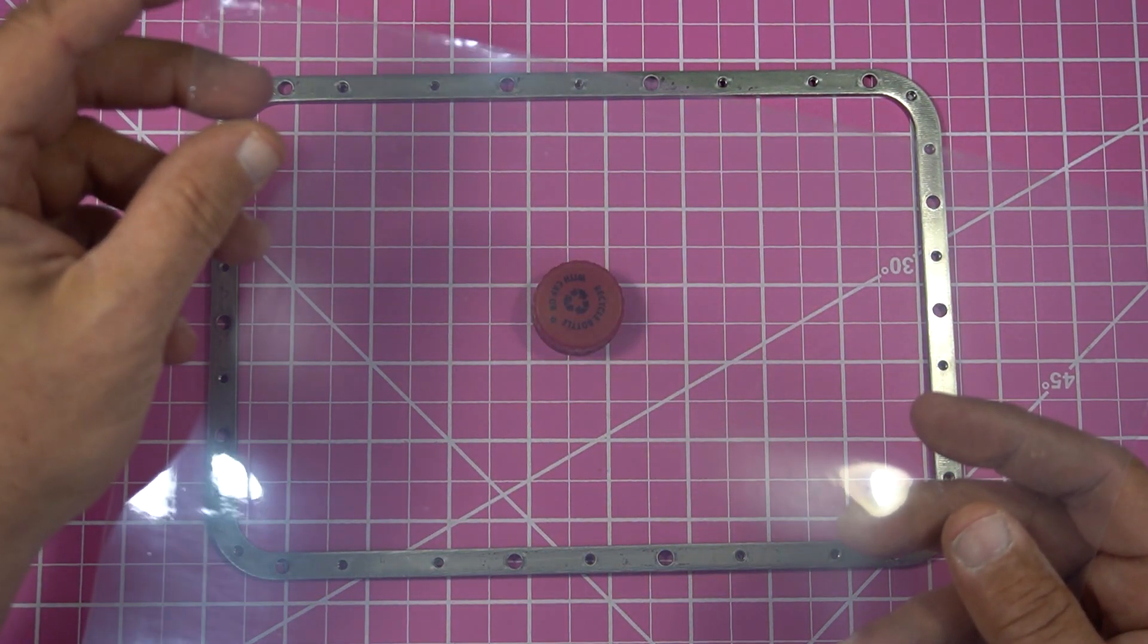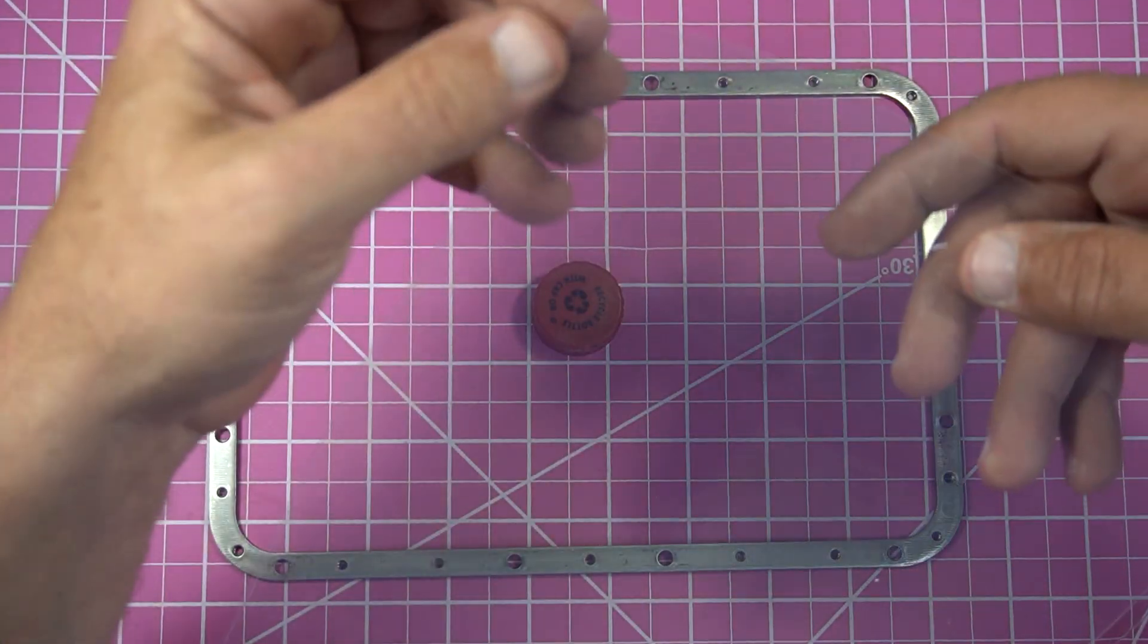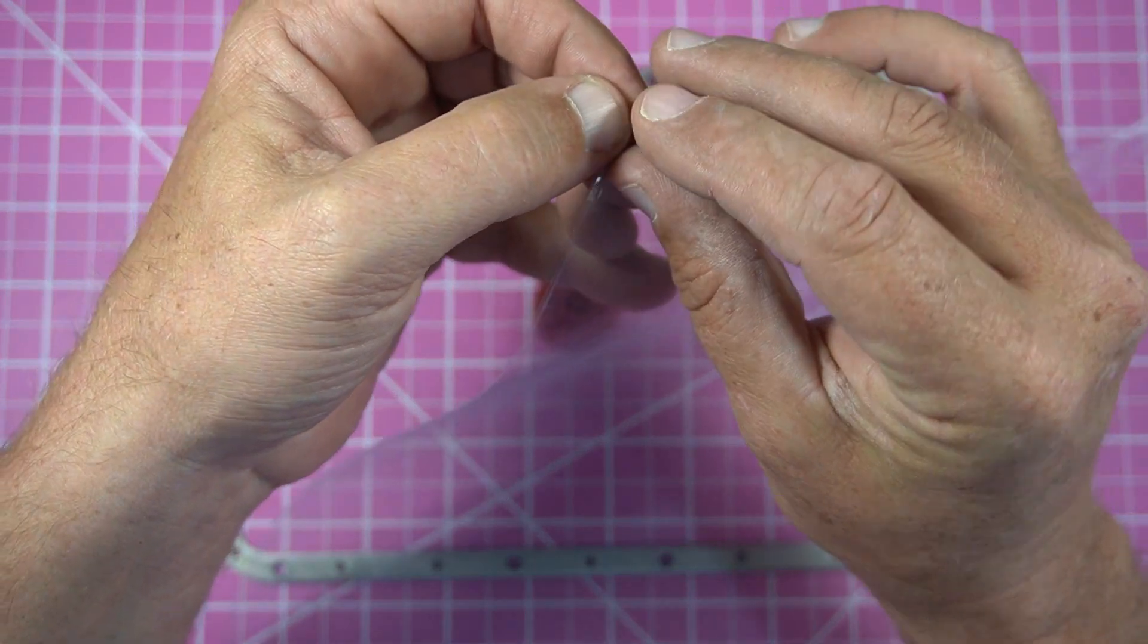The next thing we're going to do is pull off the protective sheets on the FEP itself. There's two sides of protective film on these, so make sure you get both off.